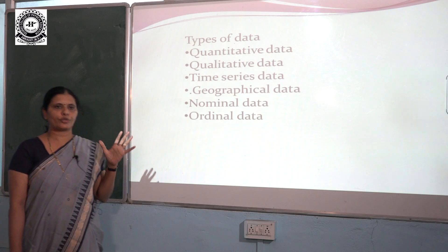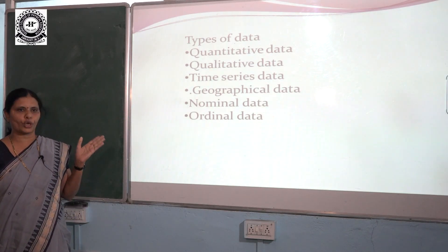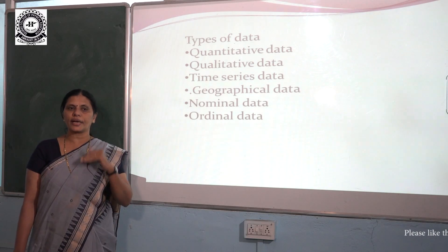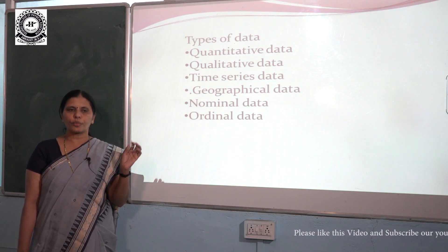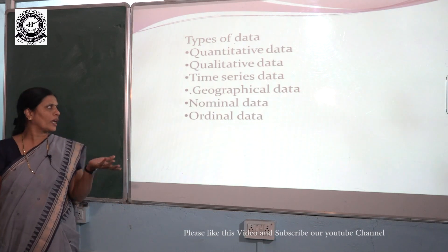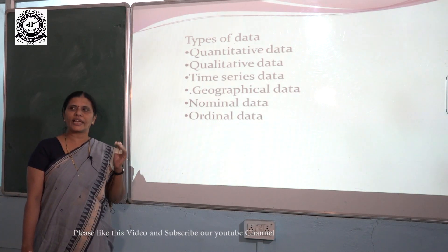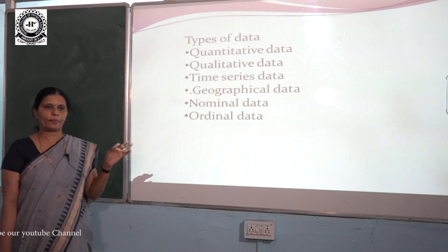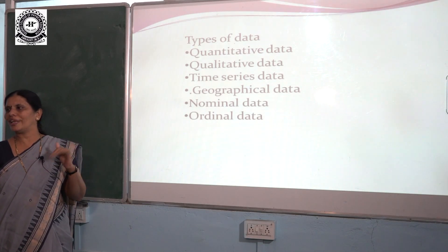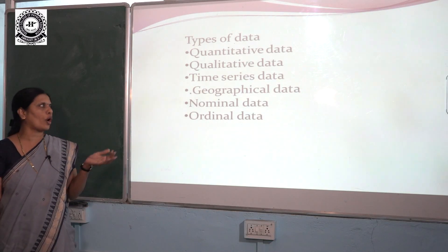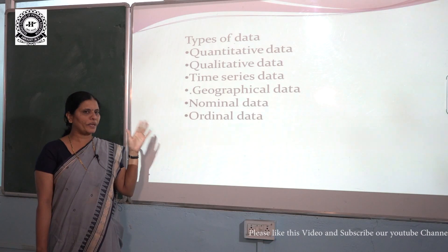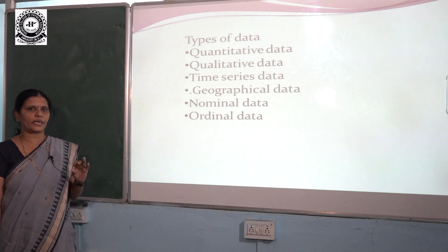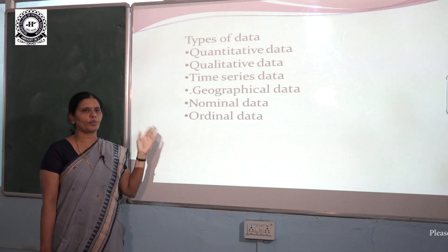There are different types of data: quantitative data, qualitative data, time series data, geographical data, nominal data, and ordinal data. Quantitative data is collected regarding some quantity — for example, the population of a city. Qualitative data is collected regarding some quality — for example, the number of blind people in a city. Geographical data is collected regarding a geographical place or location. Nominal data is collected regarding any name, and ordinal data is collected regarding any order.